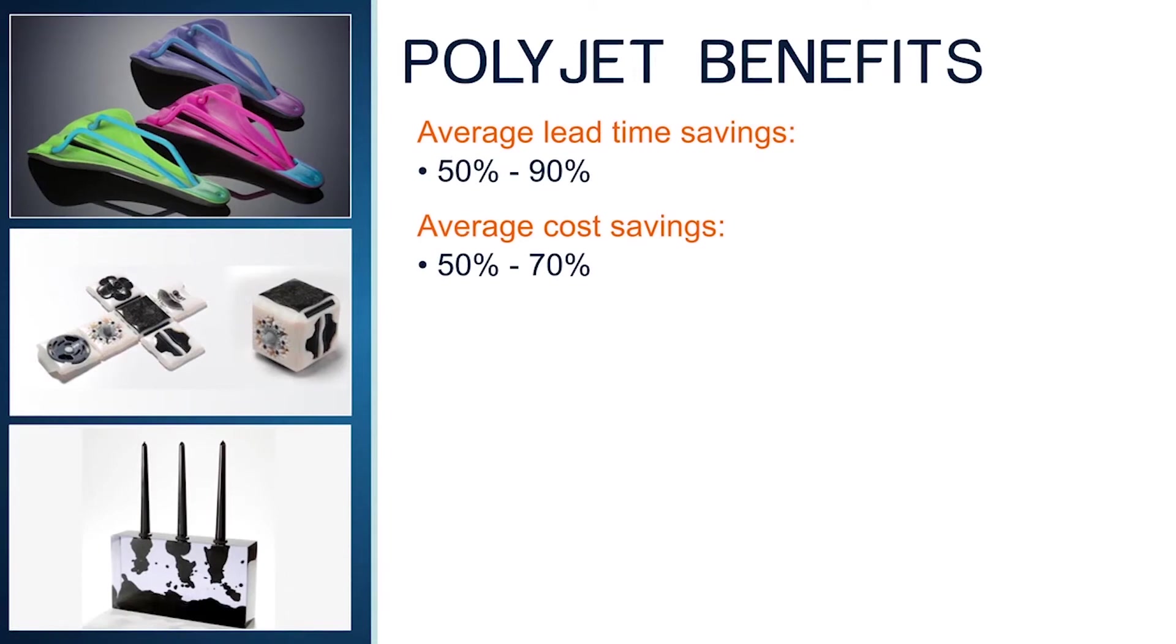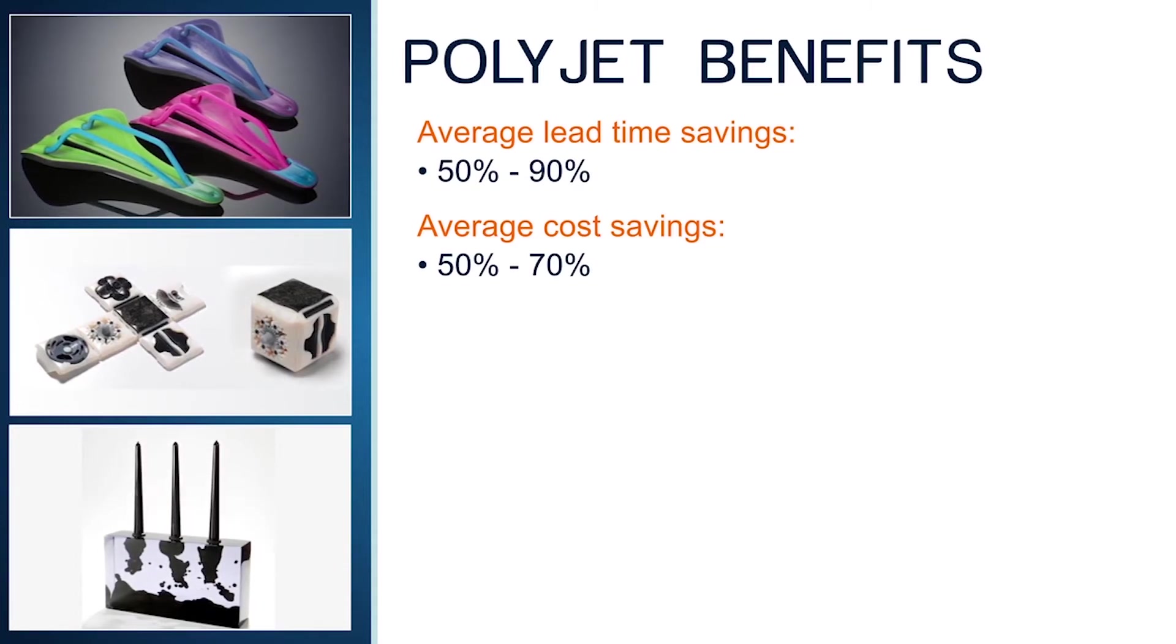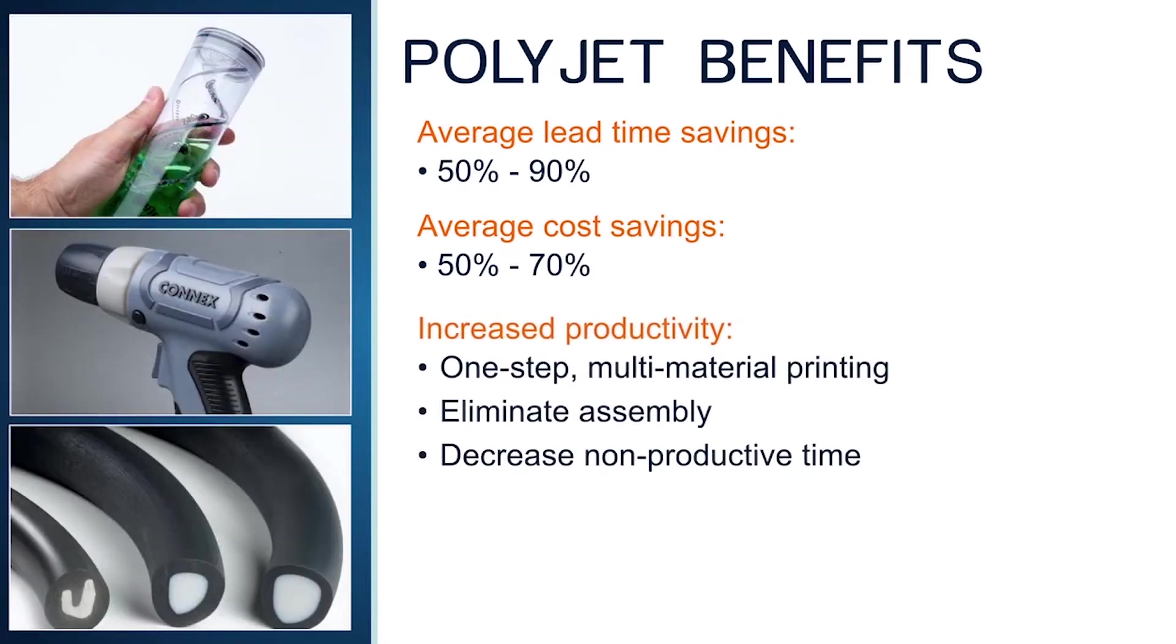PolyJet multi-material printing reduces time and cost when compared to traditional prototyping methods. By simplifying the process, companies report savings of 50 to 90 percent. Those savings are the result of increased productivity. The one-step process eliminates tooling and most of the direct labor expense. It also minimizes the need for secondary operations like painting and assembly.